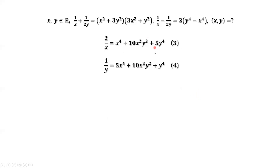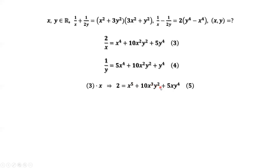Now we have the two results. We need to get rid of the denominators for both equations. Equation 3 times X gives us: 2 equals X to the power of 5 plus 10X to the power of 3 Y squared plus 5X Y to the power of 4. Equation 4 times Y gives us: 1 equals 5X to the power of 4 times Y plus 10X squared Y to the power of 3 plus Y to the power of 5.